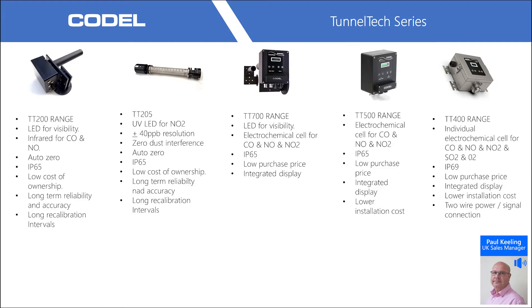So the gas analysing range. Firstly, the TunnelTech 200 range — each one is subdivided into a range of analysers with different combinations. You have visibility there measured by a high-power LED, and we use infrared on this range to measure CO and NO in any combination. All of these devices are minimum IP65, with very low cost of ownership and easy installation. We look for long-term reliability and stability with long times between recalibration. The TunnelTech 200 is the main backbone of the infrared range. Of course, you cannot measure NO2 with visible or infrared.